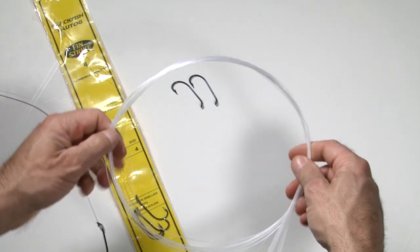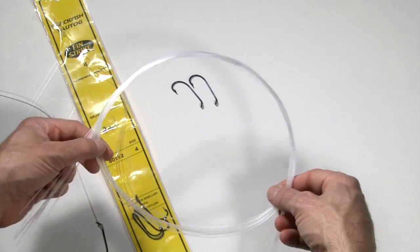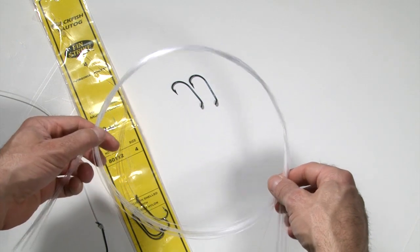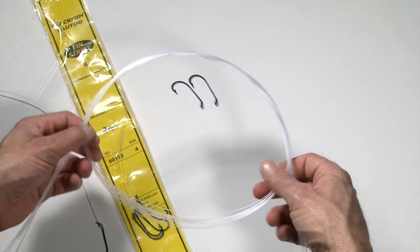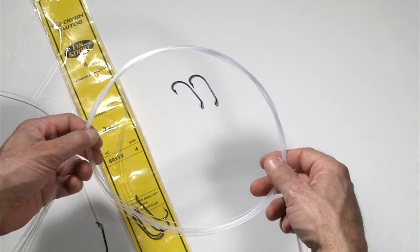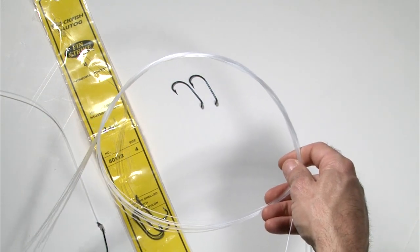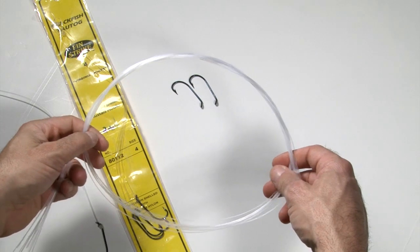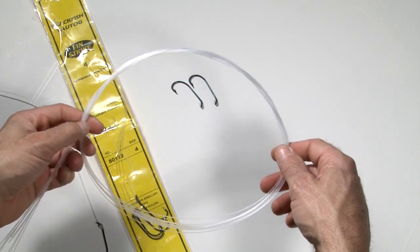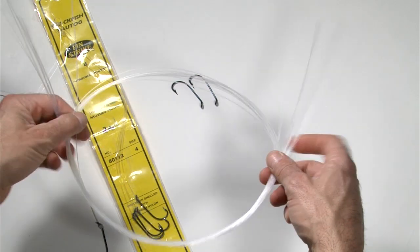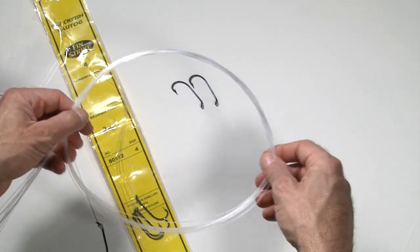I like to tie it with the hard monofilament pre-cut lengths that you can buy at a tackle shop. This line is good because it's easy to tie, it's very abrasion resistant, and it's also pretty stiff so it keeps your bait straight out without coiling up and tangling. You see these a lot on the rigs from blackfish to fluke to even cod rigs.